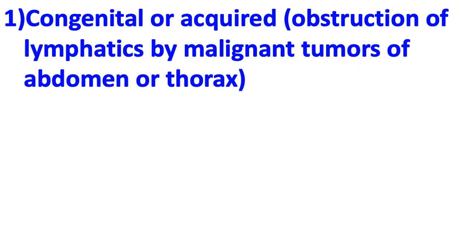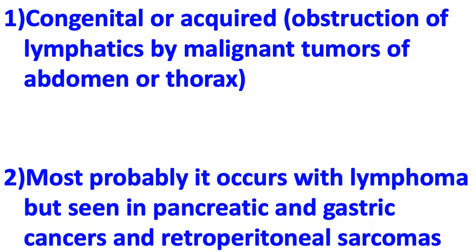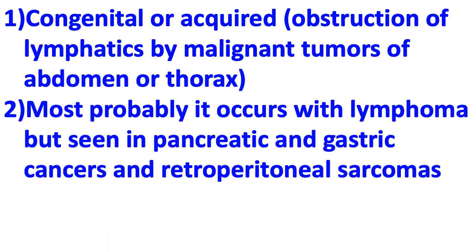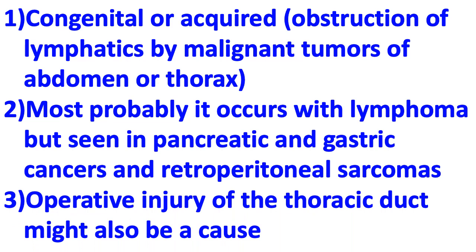Chylous peritonitis — congenital or acquired — occurs due to obstruction of the lymphatics by malignant tumors of the abdomen or thorax. It most probably occurs with lymphoma, but is also seen in patients with pancreatic and gastric cancers and retroperitoneal sarcoma. Operative injury to the thoracic duct may also be a cause.